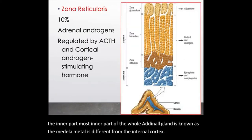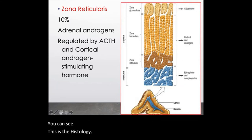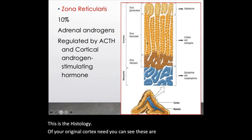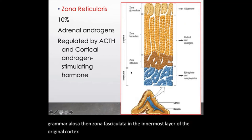You can see this is the histology of your adrenal cortex. Here you can see the cells of the zona glomerulosa, then zona fasciculata, and the innermost layer of the adrenal cortex is the zona reticularis. These are the cells of the medulla.